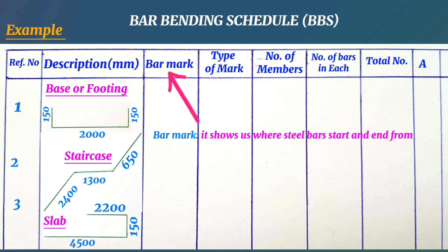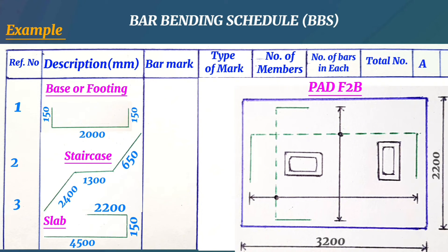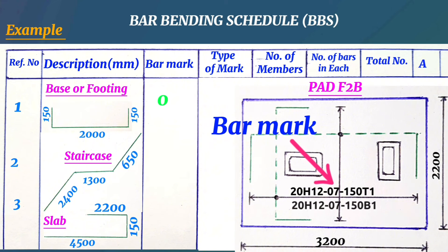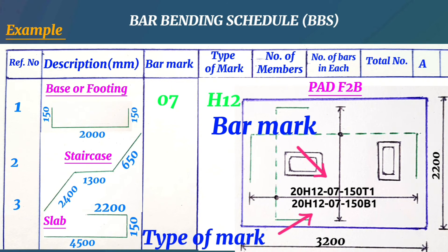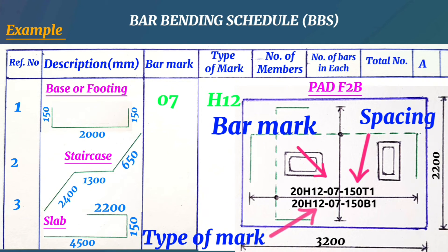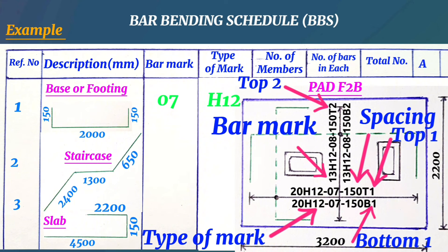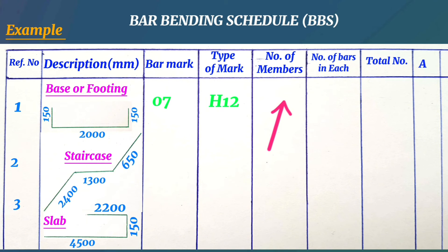The bar mark shows where our steel bars start and end. For example, for base or footing F2B, along here we have 20H12, bar mark 7, with 150 millimeters spacing for both the top and bottom bars. The type of mark shows which group of steel bars run from one point to another, with 150 millimeters denoting the center-to-center spacing. In the table, the type of mark simply means the bar thickness, such as H12, H16, H10, or H20.